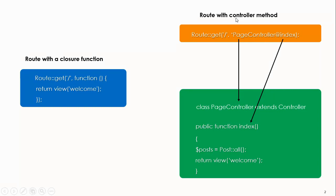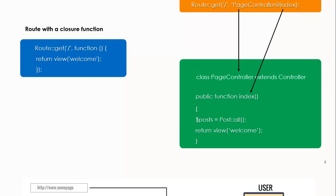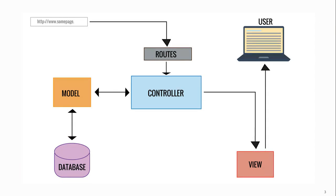So if you look at this route, it's handled with a controller method. Every time this route receives a GET request for this URL — that is the homepage — it will look for this controller class, and then under the method called index it will take all that action, which includes getting a view called welcome, and if necessary, retrieving the data from the models and passing it to the view. So a controller acts as a link between the model and the view, retrieving the model and passing the necessary data to the view.